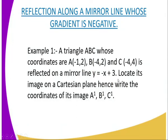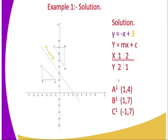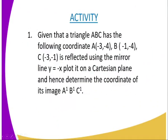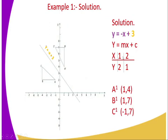Next, you are supposed to come up with the coordinates of the mirror line. To get the coordinates of the mirror line, you write the equation in the form y = mx + c. It is already in the form of the equation of a straight line. From there, you pick two values for x — that is one and two.